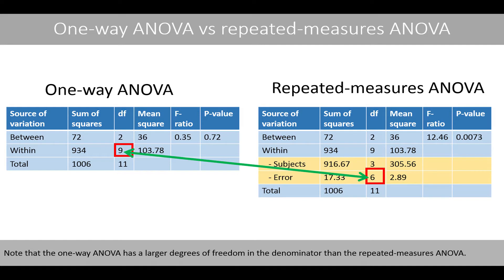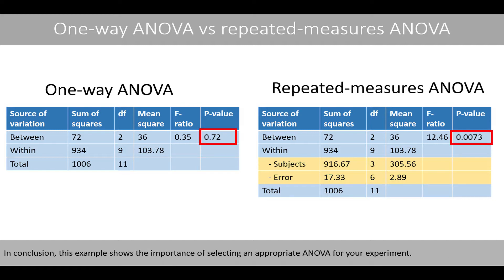Note that the one-way ANOVA has a larger degree of freedom in the denominator than the repeated measures ANOVA. In conclusion, this example shows the importance of selecting an appropriate ANOVA for your experiment.